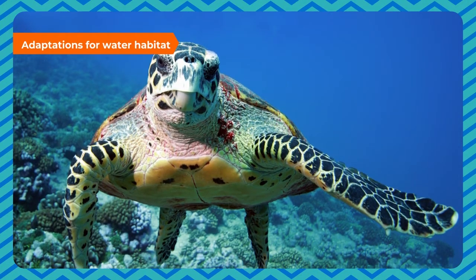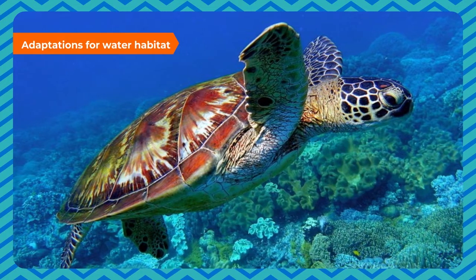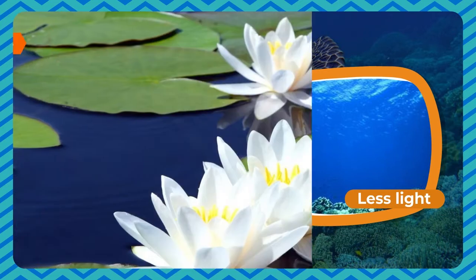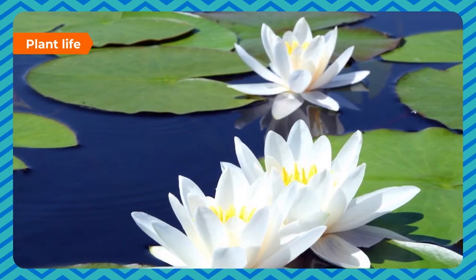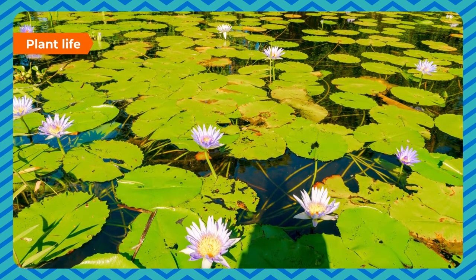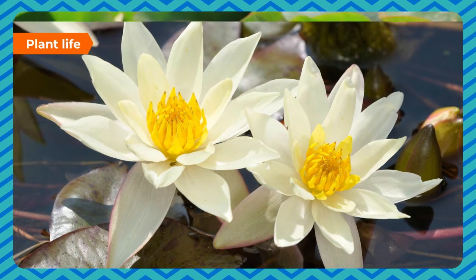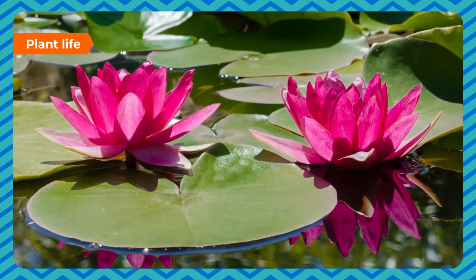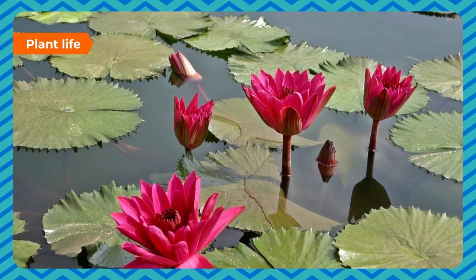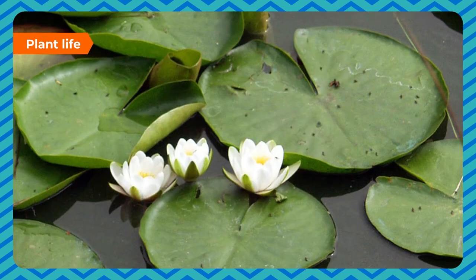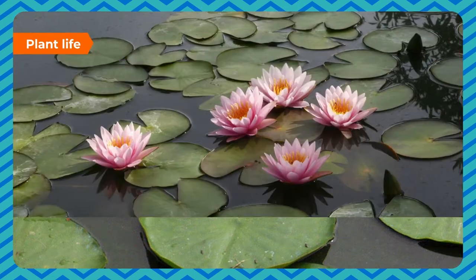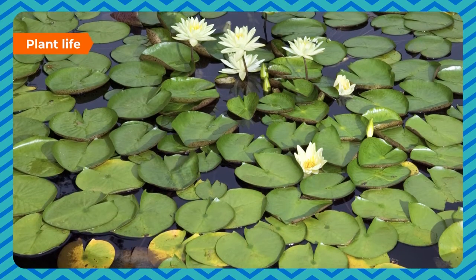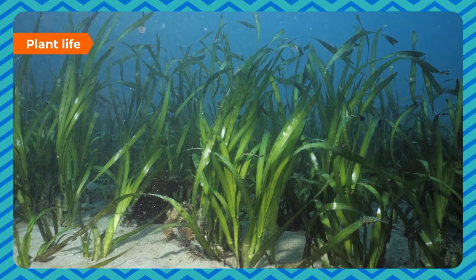Organisms living in water must adapt to breathing in water, movement of water, water pressure and less light. Water plant adaptations include much-reduced roots whose main function is to hold the plant in place, long and narrow stems to withstand water currents without damage, and stems with air spaces to enable the plant to float. Floating leaves are large and flat with a waxy upper surface to make them waterproof, and have stomata on the upper surface exposed to air. Submerged leaves are long and ribbon-like to withstand water currents without damage.